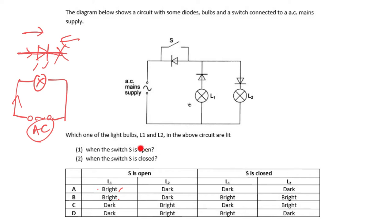Let's consider the first scenario when switch S is open. With an open circuit, that part of the circuit is redundant — no current flows through it. When the AC current tries to flow in the clockwise direction, the diode is reverse biased, resistance is very high, so no current can flow through. Both L1 and L2 will not light up.